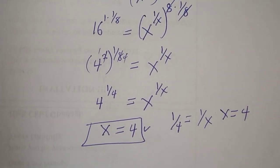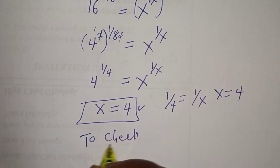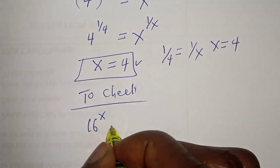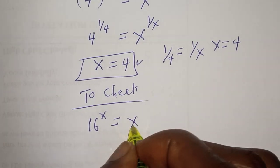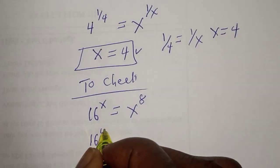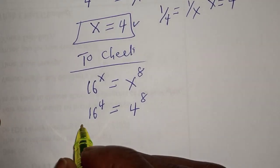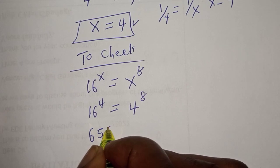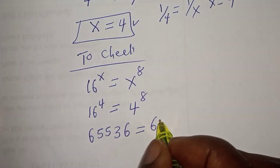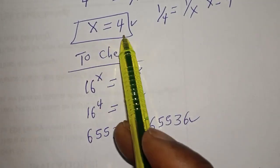We can check to confirm if our answer is right or wrong. To check, we have the given equation: 16 raised to power s is equal to s raised to power 8. Now, when s is equal to 4, we have 16 raised to power 4 is equal to 4 raised to power 8. And 16 raised to power 4 is 65,536, which is equal to 4 raised to power 8, which is also 65,536. This satisfies the given equation at s is equal to 4.